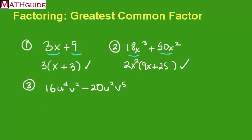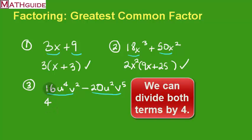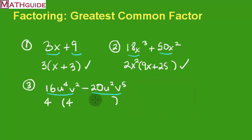First I look at the numbers and ask: is there something in common between them? I could divide them by 2, getting 8 and 10 — but I could still divide by more. The largest number I can divide by is 4: 16 divided by 4 is 4, and 20 divided by 4 is 5. So 4 times 4 is 16, and 4 times negative 5 is negative 20. The distributive property gets back my original numbers.